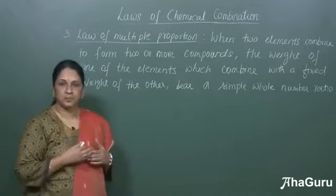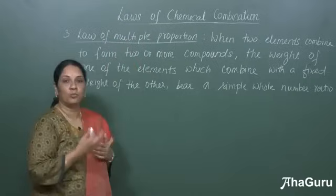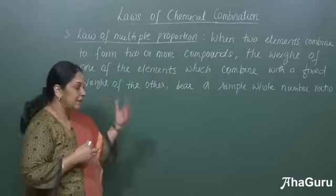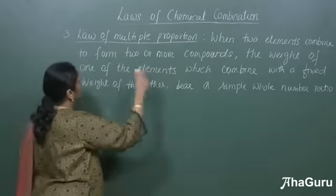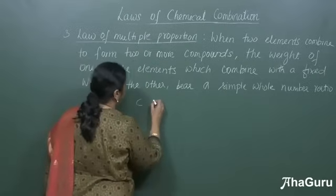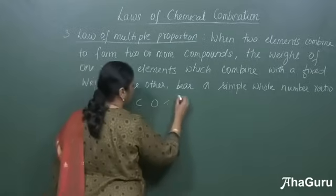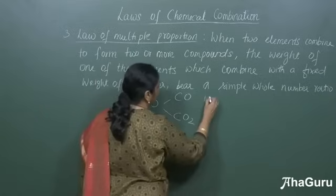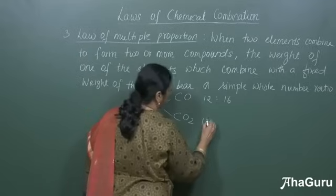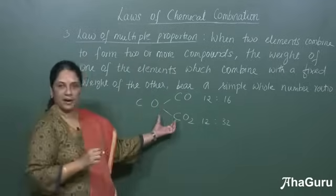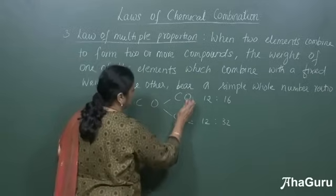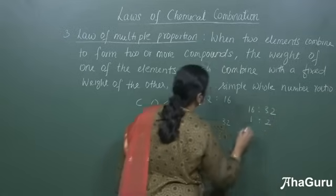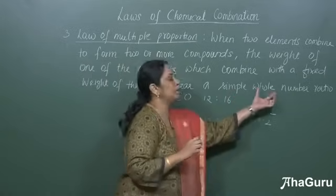The third law is the law of multiple proportion. This states that when two elements combine to form two or more compounds, the weight of one element which combines with the fixed weight of the other bears a simple whole number ratio. For example, carbon and oxygen can form carbon monoxide or carbon dioxide. In CO, the ratio of carbon to oxygen is 12 to 16; in CO₂, it is 12 to 32. The fixed mass is carbon, the varying element is oxygen. The ratio of the oxygen masses is 16 to 32, which is 1 to 2 — a simple whole number ratio.